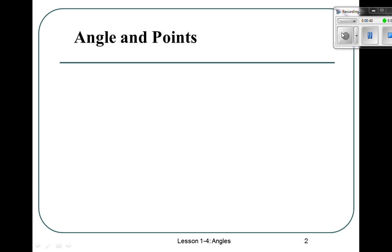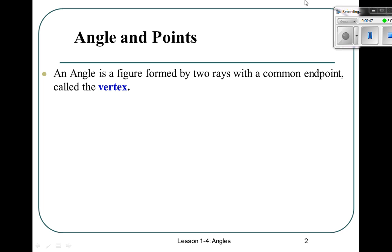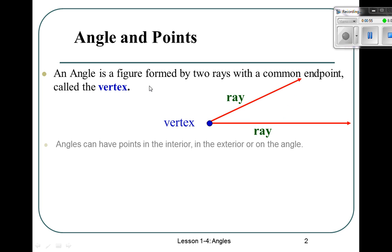Angles and points. An angle is a figure formed by two rays with a common endpoint, called the vertex. Angles can have points in the interior, in the exterior, or on the angle. Interior means inside. Exterior is outside.